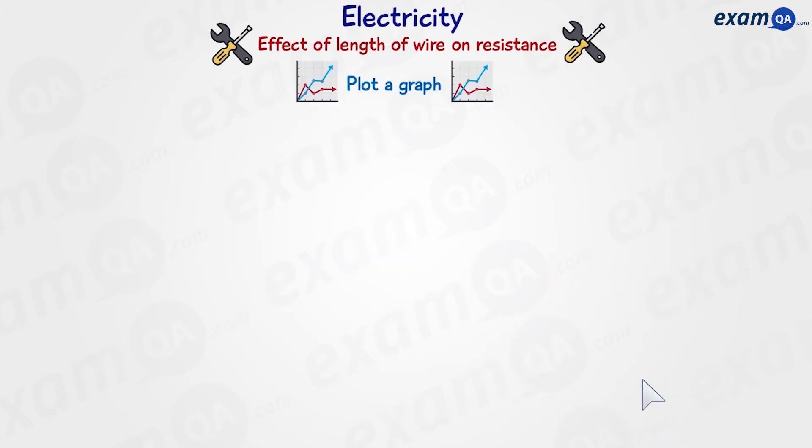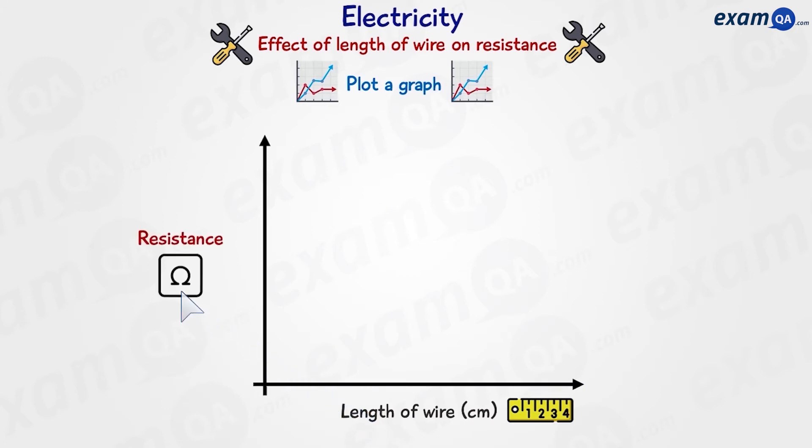Then we're going to plot a graph. And the graph is going to have on the x-axis the length of the wire, and on the y-axis we're going to have resistance. Once you have all your values, your line should look something like this.